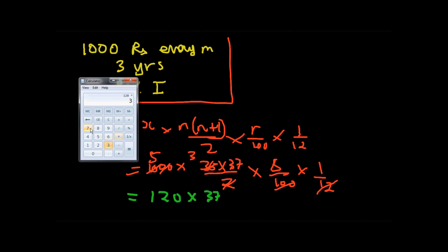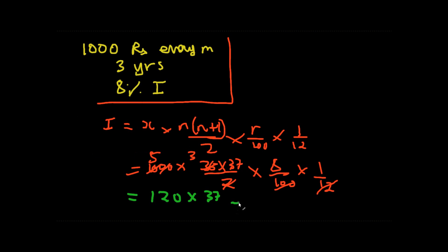Yeah. 4,440. That's your interest. And they asked for maturity values. So you add x into n, which is n is 36, x is 1000. So 36,000. And to this you add the 4,440. So the maturity amount is 40,440.